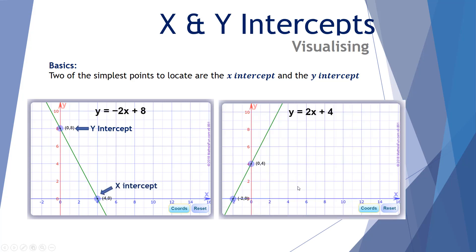Let's consider another situation. Here I have the point (-2, 0) on the x-axis and the point (0, 4) on the y-axis. So this is our y-intercept — it's where the green line crosses the y-axis — and this is the x-intercept. Note in both cases, the x-intercept has a y value of 0, and the y-intercept has an x value of 0.